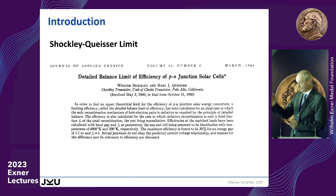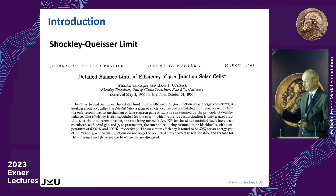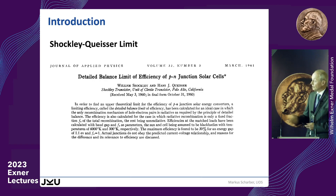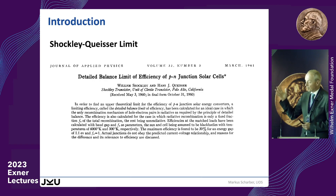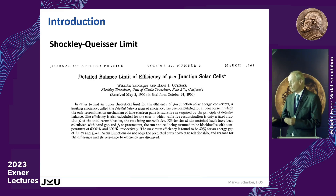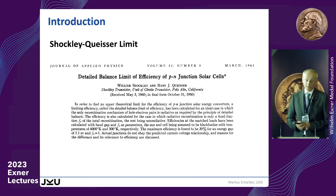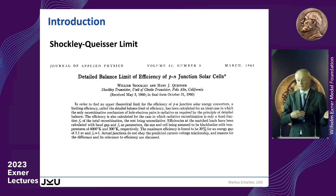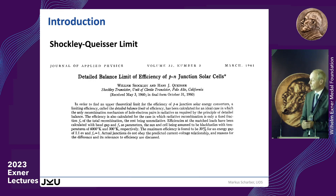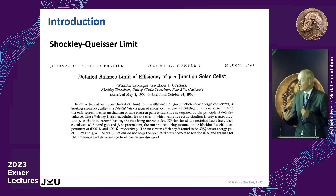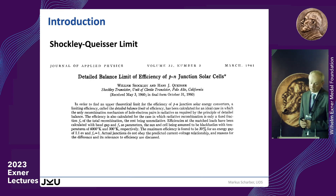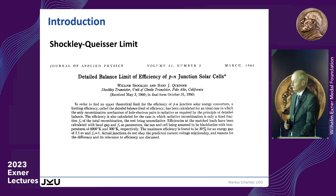Around the same time, Shockley and Queisser published a paper in 1961 discussing the maximum power conversion efficiency of solar energy conversion for a material with a single band gap, calculating a maximum of 33 or 34 percent. About the same time, somebody published a paper with 0.001 percent efficiency — so it's pretty clear the PV community was not very excited about organic solar cells in the beginning.